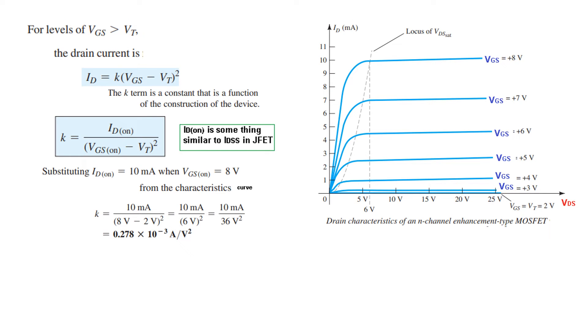Now in this particular case, ID(on) is like, if this is the maximum voltage that we are talking about for VGS, so in this case the maximum ID or ID(on) we are calling is 10 milliamperes. So ID(on) is 10 milliamperes and VGS(on) is 8 volts. So substituting these values, and VT or the threshold voltage is 2 volts, so we find K. So this K is now valid for this particular device. So the general equation now becomes ID, and plug in the value of K, so we will be using this equation for this particular device.